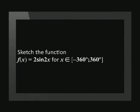Let's begin with our first example: sketch the function f(x) equals 2 sine 2x in the interval negative 360 to positive 360 degrees. The easiest method is to first list the main coordinates of the standard function, then make changes to them based on the equation.